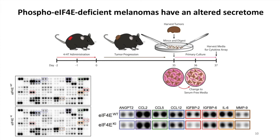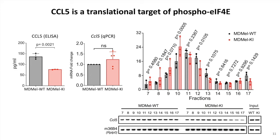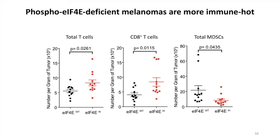Next, we wanted to understand how tumor cell intrinsic EIF4E phosphorylation could potentially affect the tumor microenvironment. It has been shown that phenotype switching could lead to increased pro-inflammatory cytokine production. So we did a cytokine array using wild-type versus knock-in tumor-conditioned media, and we were able to identify a subset of cytokines and chemokines that are downregulated in the knock-in tumors. Among these secreted factors, we further identified CCL5 as another translational target of EIF4E phosphorylation.